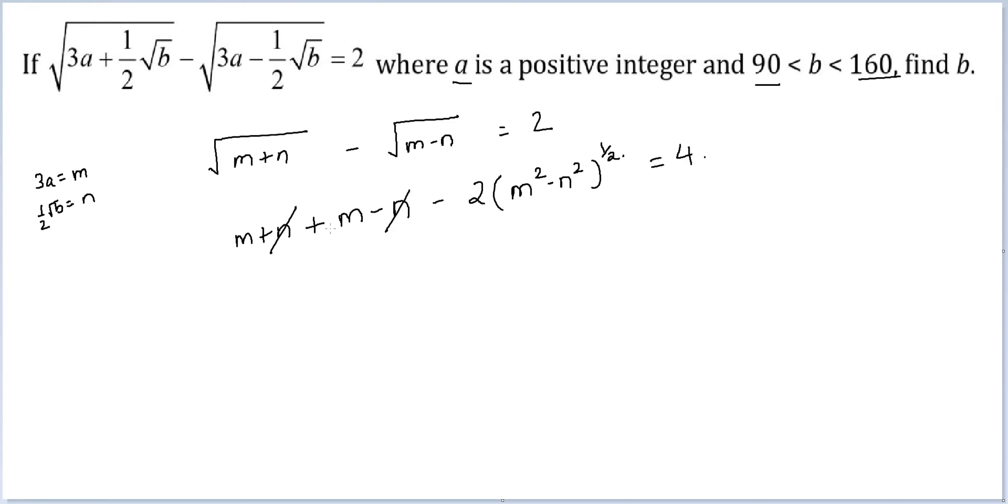Now I can replace, n and n get cancelled. I'm left with 2m which is equal to 6a minus 2√(m² - n²) = 4. I can cancel out twos from everywhere. I get 3a minus 2√(m² - n²)^(1/2).